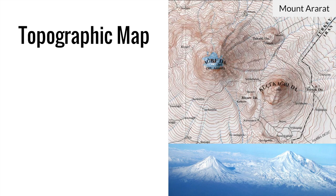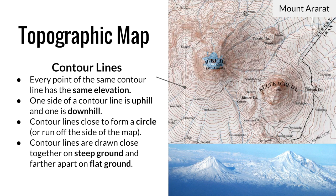Up next was the topographic map, a map that shows mountains and valleys on a flat piece of paper and uses contour lines to show where the hills and valleys are and how steep they are. Every point of the contour line has the same elevation. Lines close together form curved shapes, and lines drawn closer together represent steep ground, while lines drawn farther apart represent flatter ground.